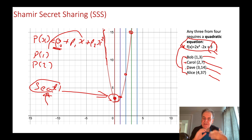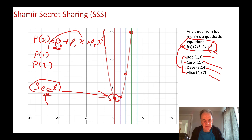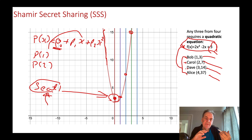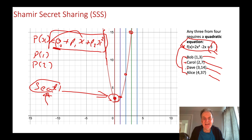For a four-from-five scheme we would use x to the power of three, and so on. The method we use to reverse the points back to the polynomial is polynomial curve fitting.